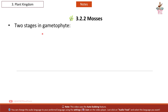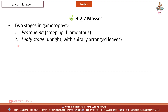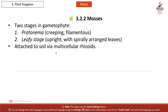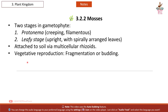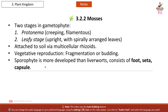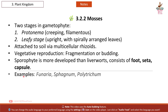Mosses: two stages in the gametophyte. First, protonema — creeping and filamentous. Second, leafy stage — upright with spirally arranged leaves. Attached to soil via multicellular rhizoids. Vegetative reproduction by fragmentation or budding. Sporophyte is more developed than liverworts; consists of foot, seta, and capsule. Examples: Funaria, Sphagnum, Polytrichum.